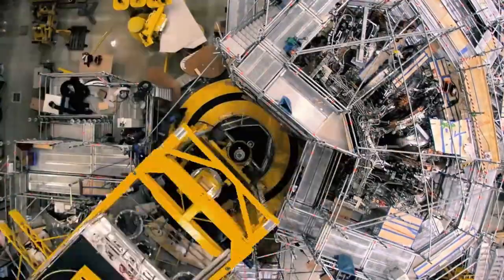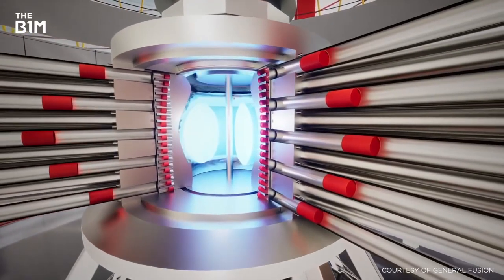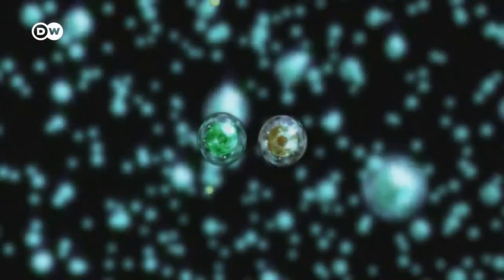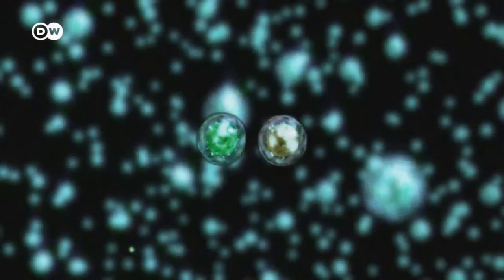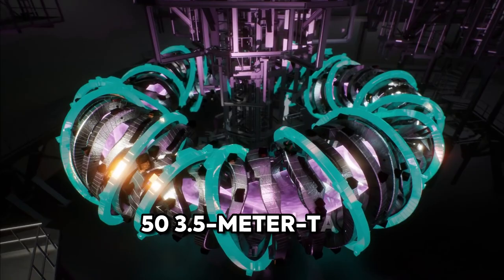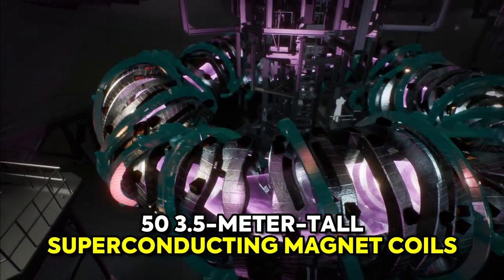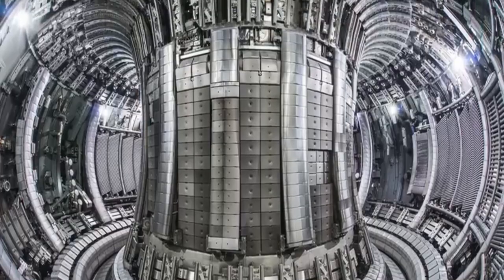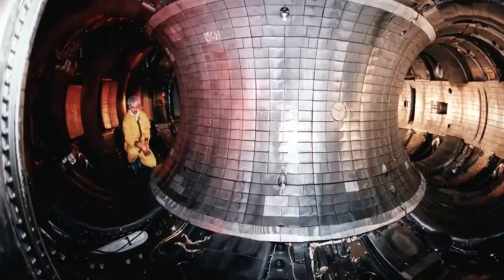A stellarator operates similarly to a tokamak in that it suspends hydrogen plasma that has been heated to the pressures and temperatures necessary to fuse material into helium. A total of 50 3.5-meter tall superconducting magnet coils make up the Wendelstein 7-X. The stellarator traps the plasma in a twisting and spiraling configuration, as opposed to a tokamak's torus or donut-shaped form.